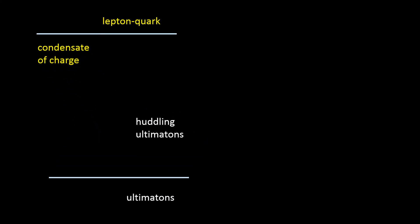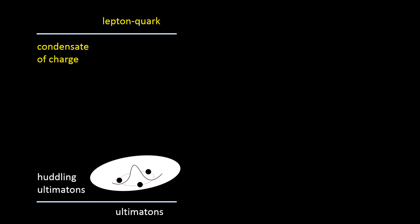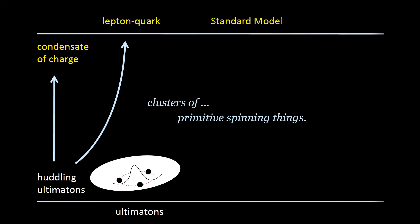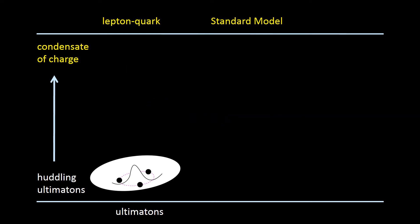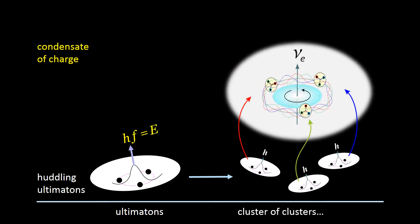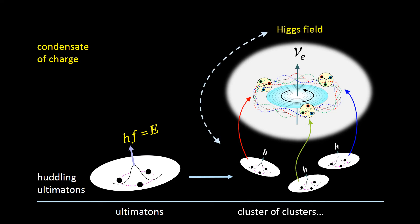Let's take a closer look. What we need to do is work out how this primitive spinning thing — this tiny polarized huddle of ultimatons — might interact with this condensate of charge, and then to show how leptons and quarks can be built up from clusters of these primitive spinning things. Our standard model already depends fundamentally on a mysterious interaction between these leptons and quarks and this condensate of charge. This is the famous Higgs mechanism by which particles are thought to get an interactive inertial kind of mass. But notice that if standard model particles really are built up from clusters of huddling ultimatons, then what we're predicting is that this Higgs mechanism is actually caused by the behavior of ultimatons — some kind of ultimatonic torsion interacting with this condensate of charge.